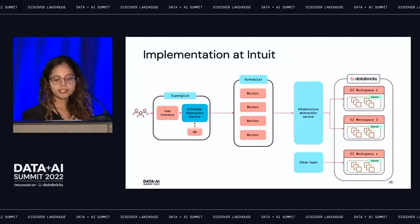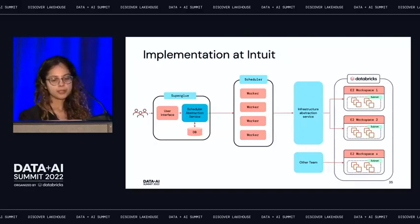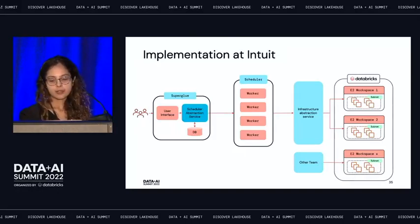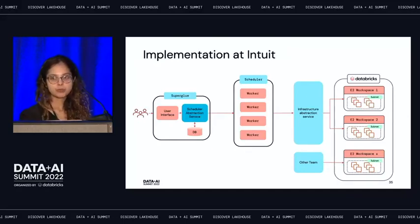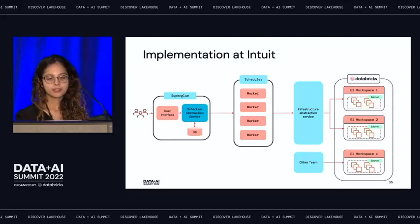At a high level, users come and schedule their jobs on Superglue, build a pipeline, and that's being scheduled. It goes through an infrastructure abstraction service, which provides an abstraction over various runtimes including Databricks and EMR. We are running on Databricks 9.1 on E2 workspace. There was a talk yesterday on scaling Intuit jobs using Databricks, and the entire Superglue team is here if you have questions.